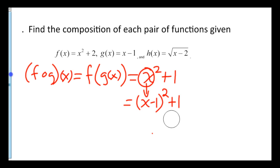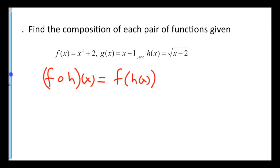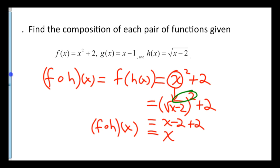Let's do one with the square root. For F composition H of x, take the F equation — x squared plus 2 — and place the H equation, square root of x minus 2, in for x. Don't squares and square roots cancel each other out? These guys cancel, which liberates x minus 2. And then couldn't I combine the 2's and just get x? So when you do F composition H of x, you get just plain x.